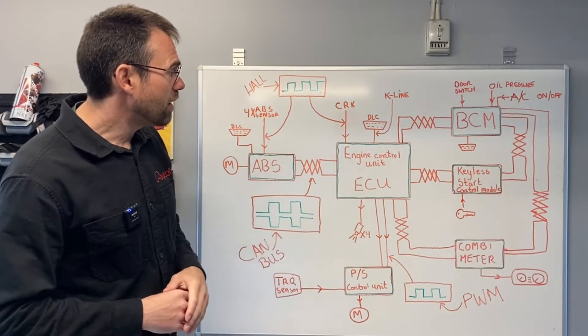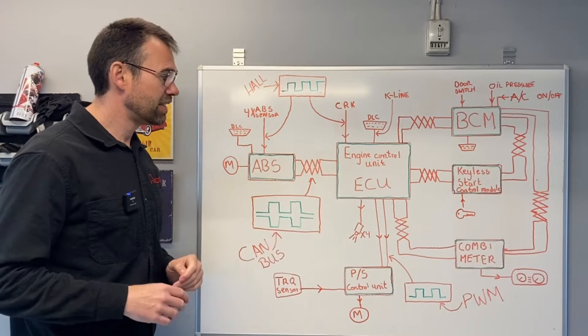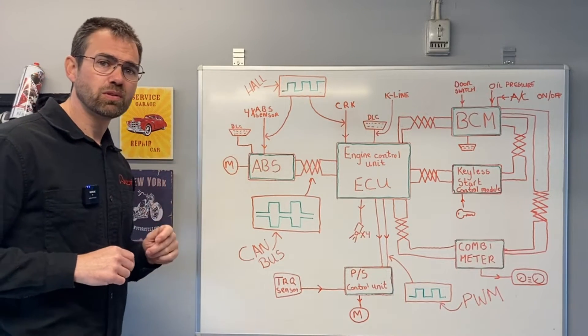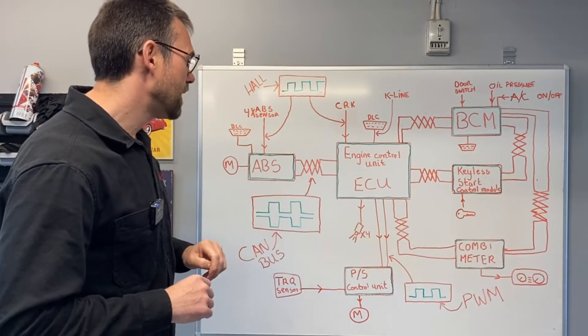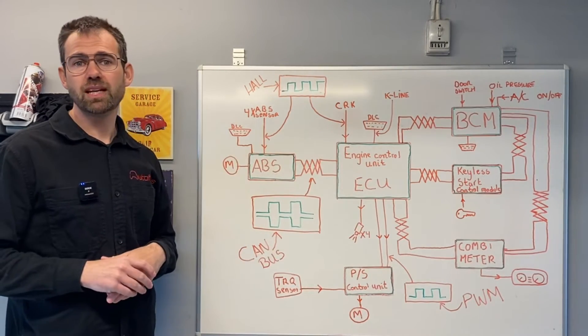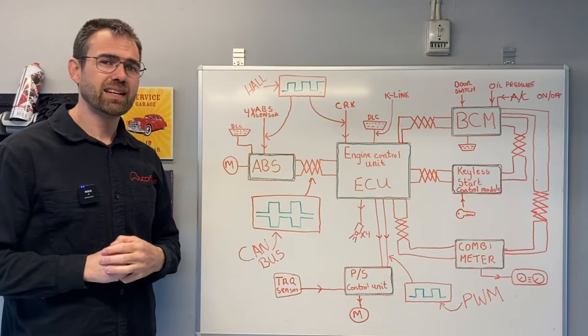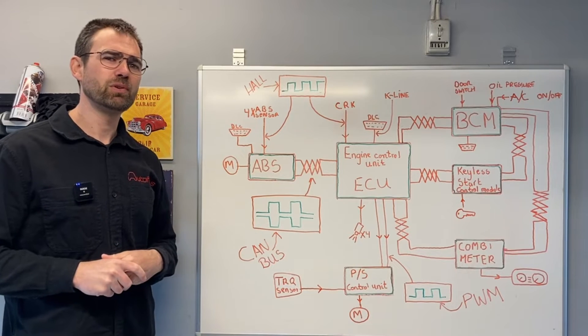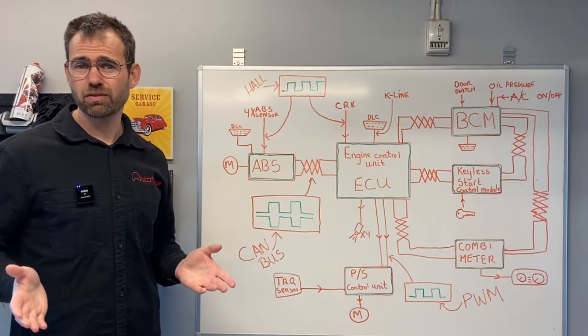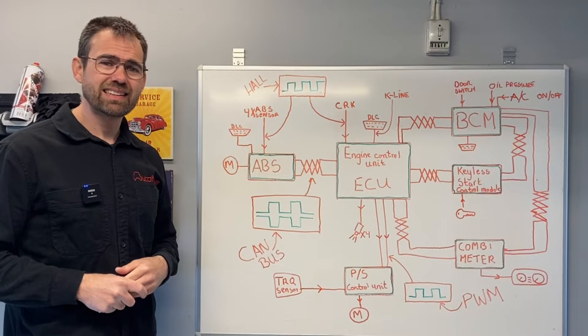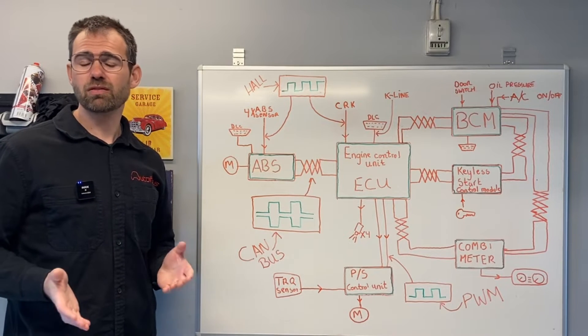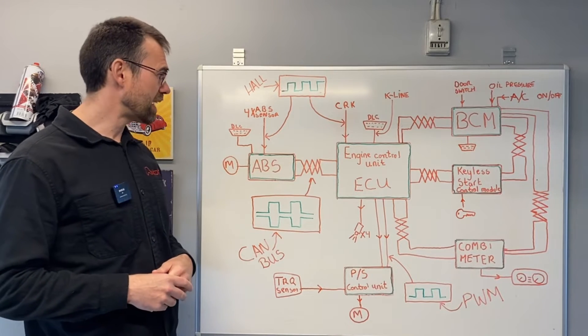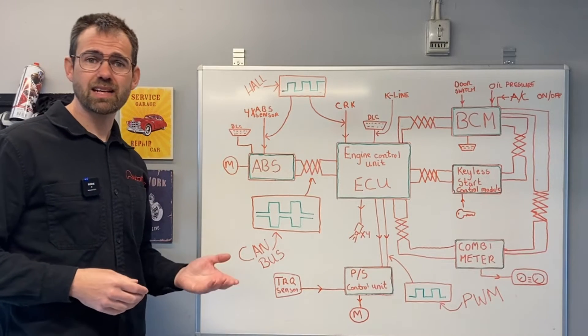Now you've got an idea what the control units are meant for. Each control unit also communicates with each other. On the Suzuki, they communicate with a CAN bus system. CAN bus is basically a protocol of how to communicate. You might have heard the word protocol before—it's just a set of rules which has been determined of how the signals should look like, what it should consist of.